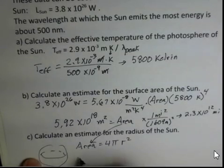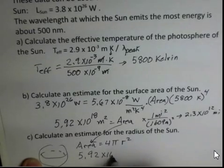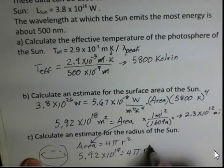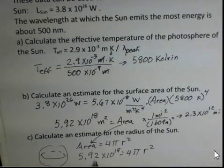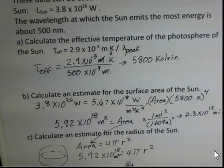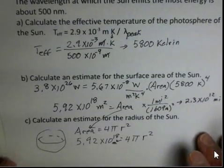And in doing so, so just to make it clear, 5.92 times 10 to the 18th equals 4 pi r squared. We need to take that area number in square meters and divide by 4 pi. And then take a square root of both sides. So I'm going to let you do that.